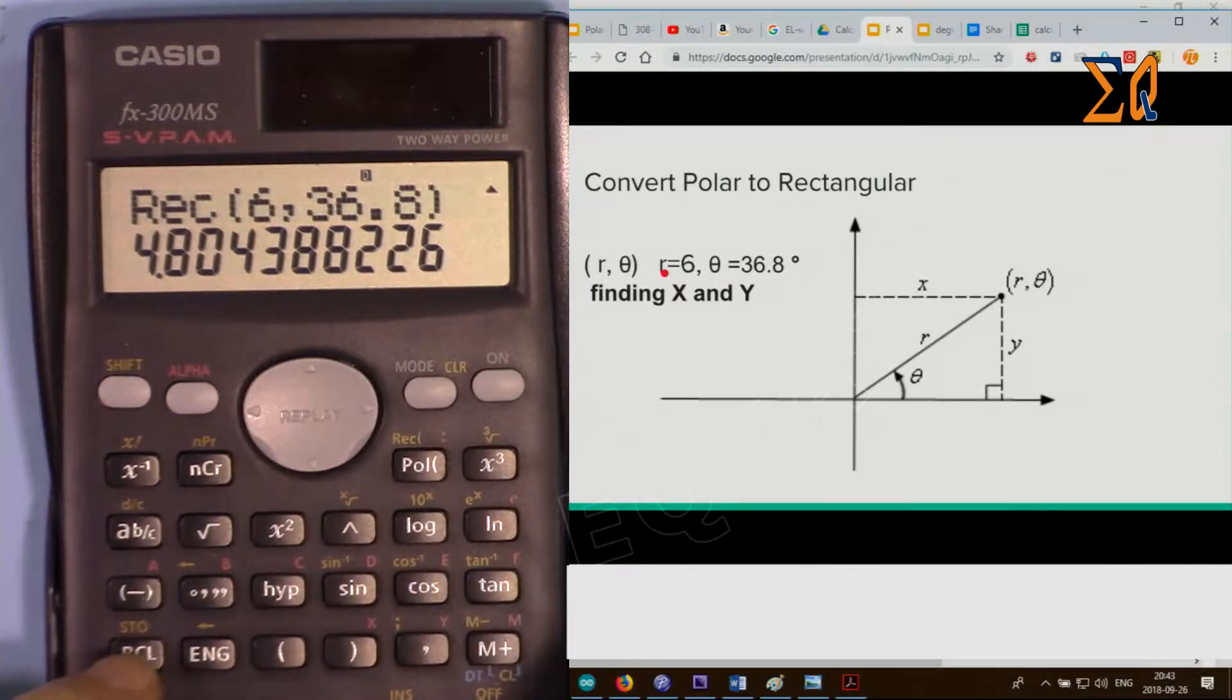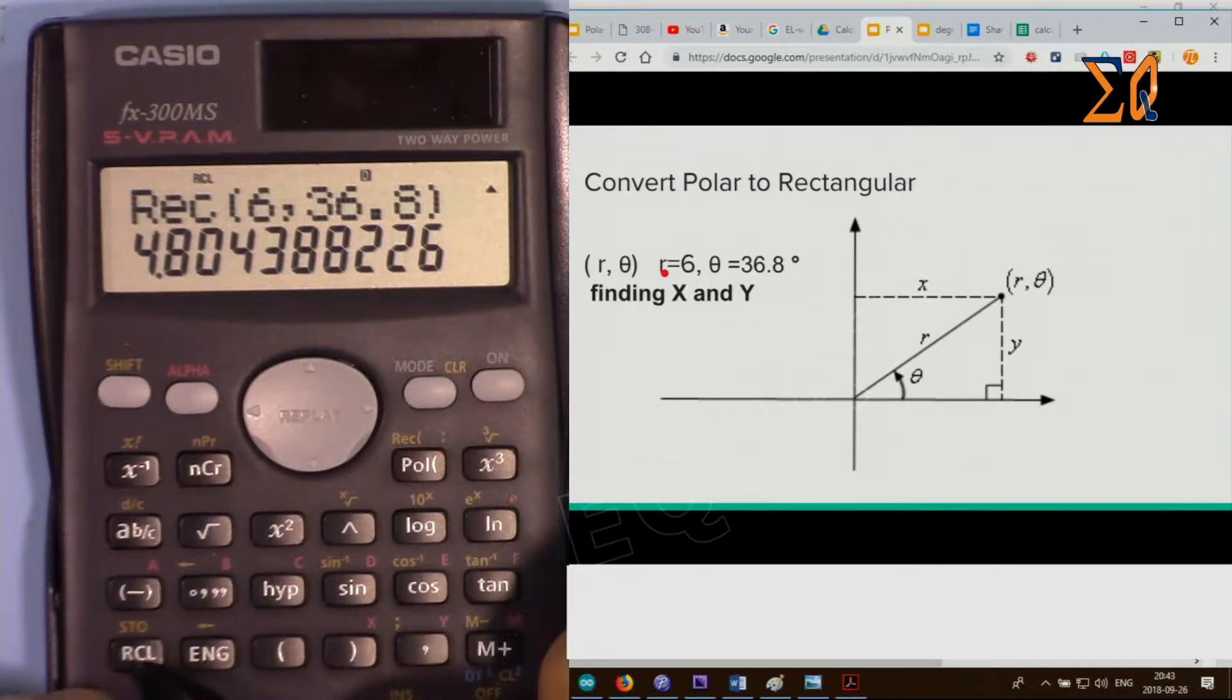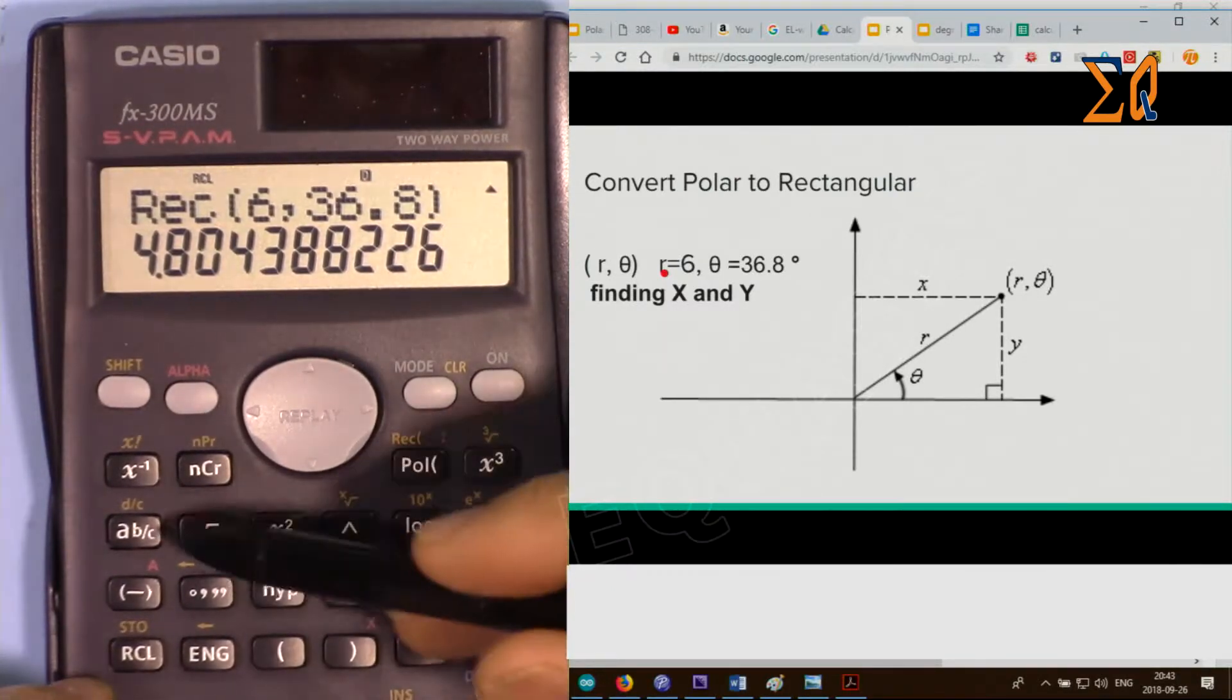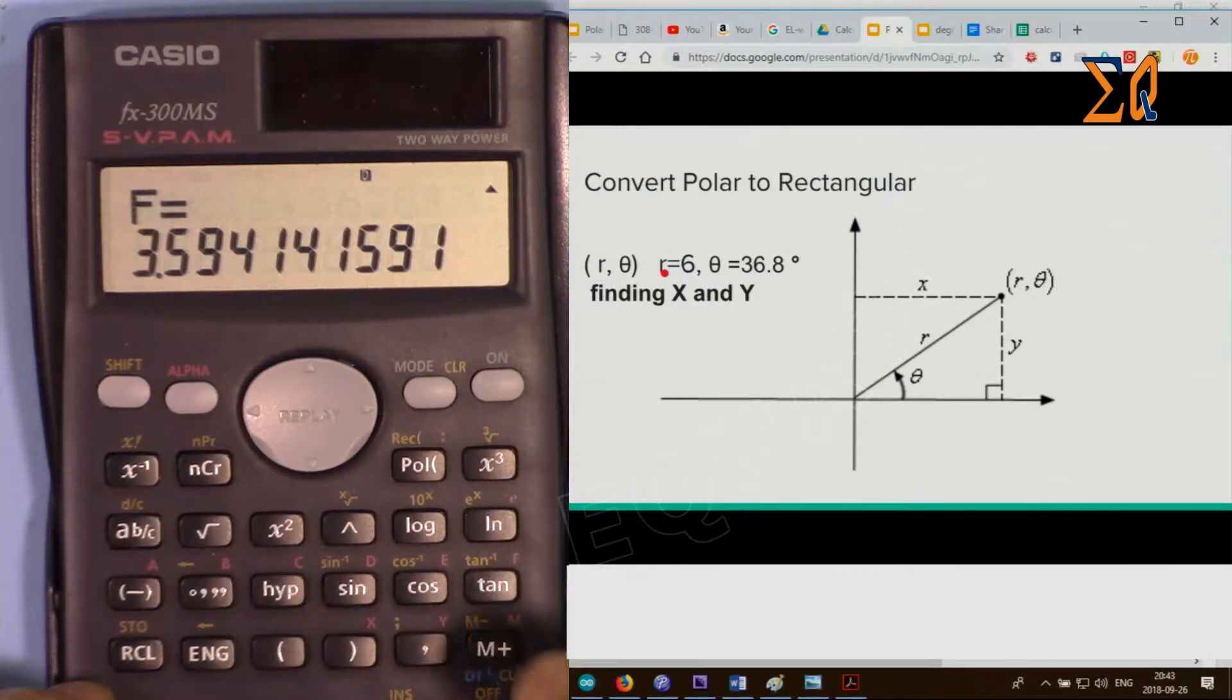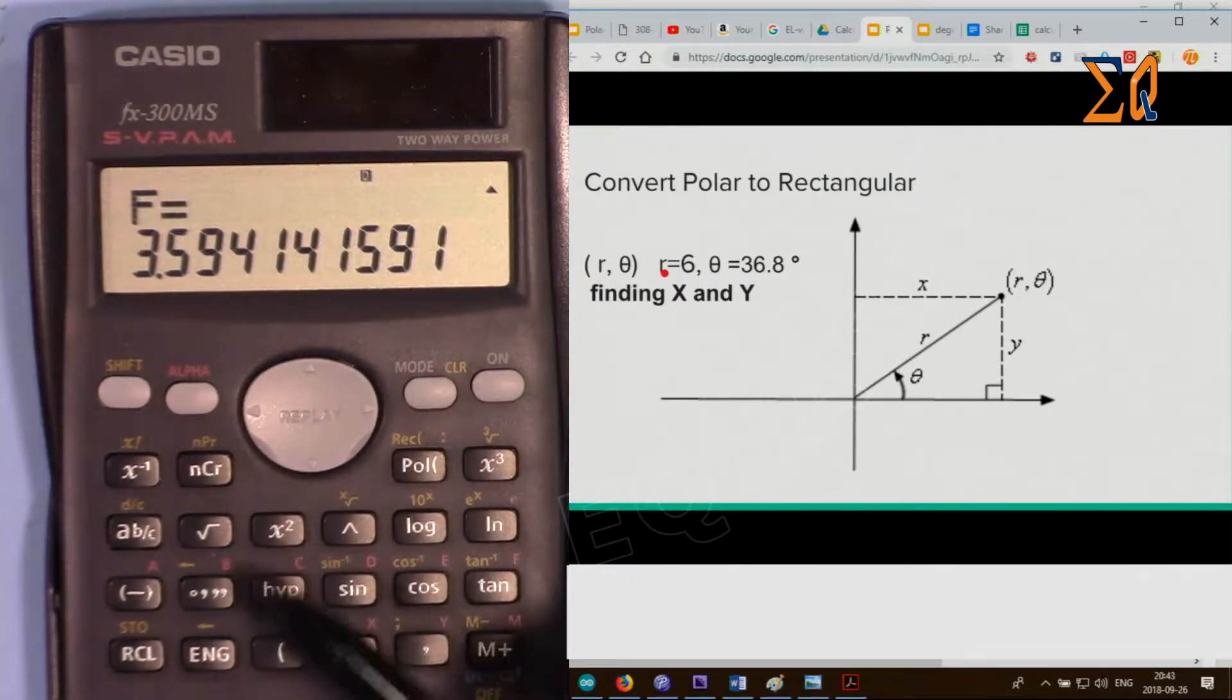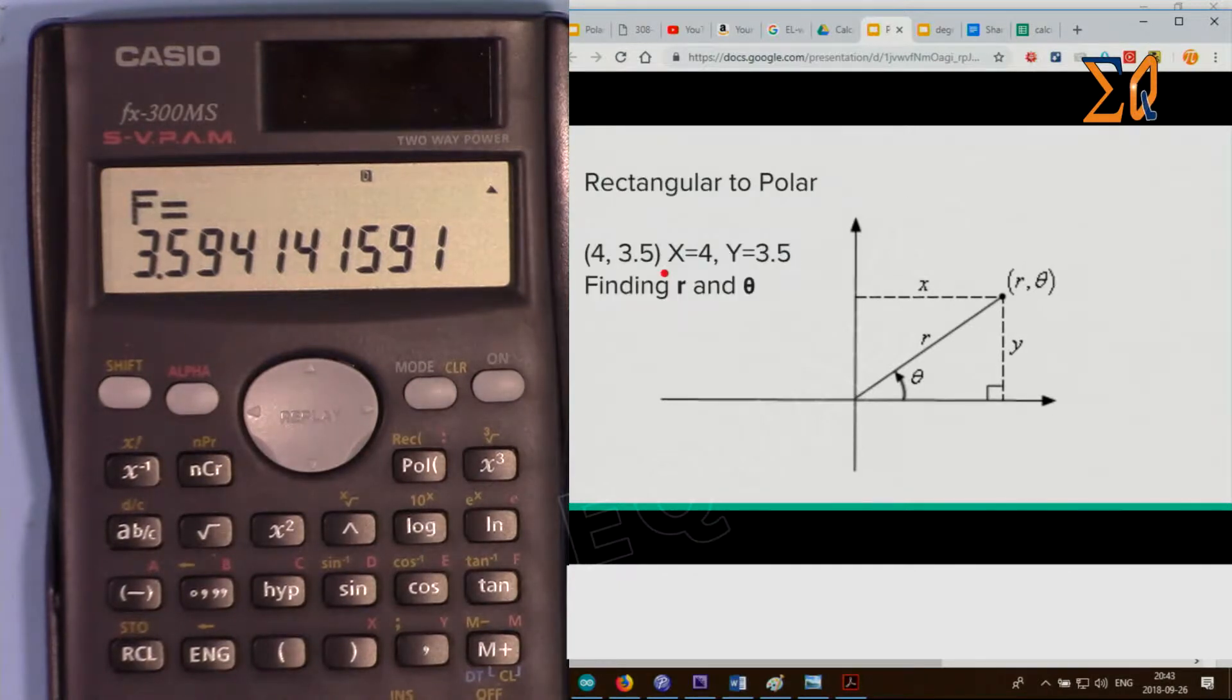For the Y value I have to press recall RCL and then tan button. When I press recall that's F, so the value will be stored in the memory F. I have another video explaining how to use the memory. So Y is 3.59. Now let's say you have X and Y values.